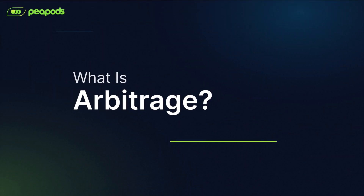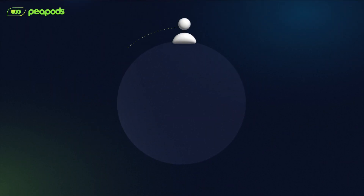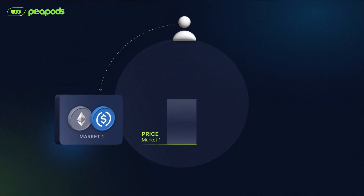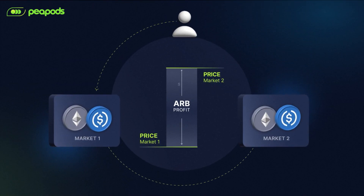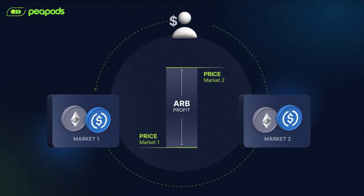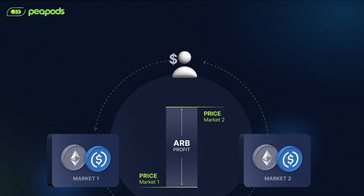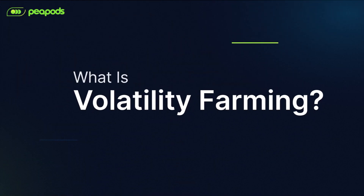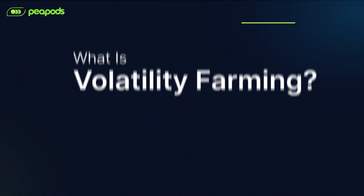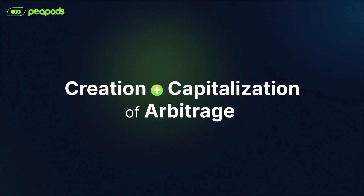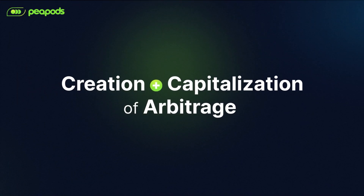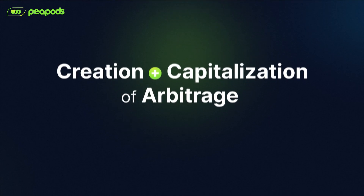What is arbitrage? Arbitrage is the act of buying an asset at a low price in one market and then immediately selling it for a profit in another market. What is volatility farming? Volatility farming is the act of creating and capitalizing on arbitrage opportunities.